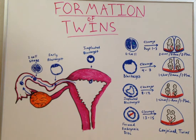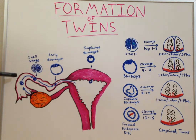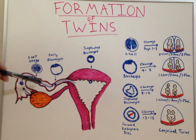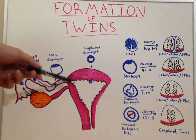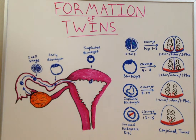For monozygotic twins, there is still only one egg which is ejected from the ovary. However, at some point in the process, while it is coming through the fallopian tubes and about to get implanted, at some point this egg will split.